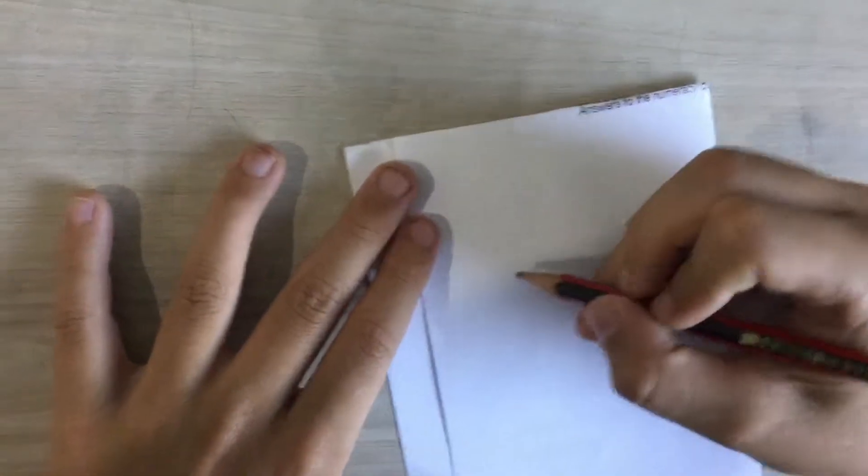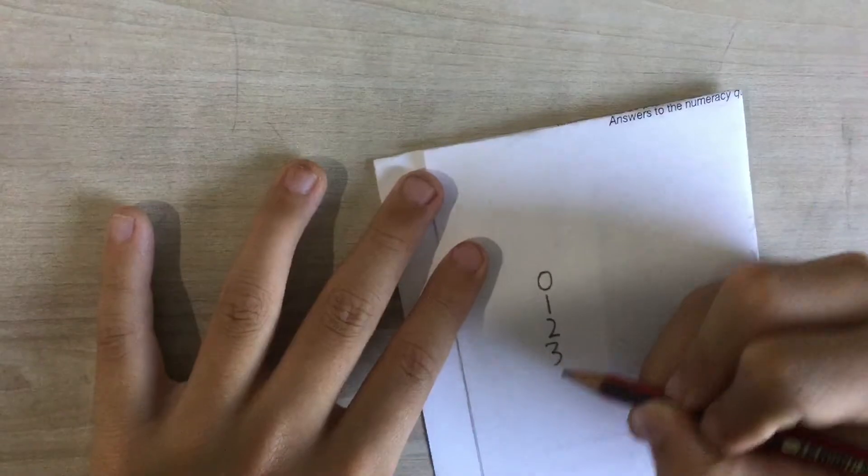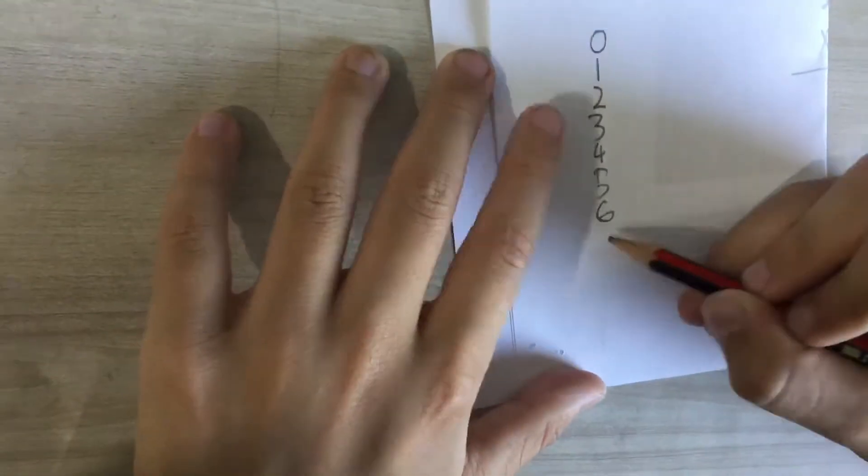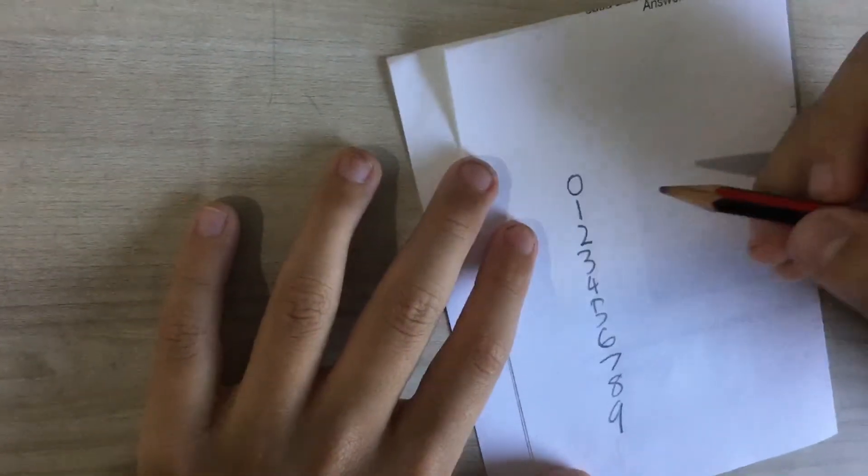You don't need to learn anything. All you write is just this. You write 0, 1, 2, 3, 4, 5, 6, 7, 8, 9.